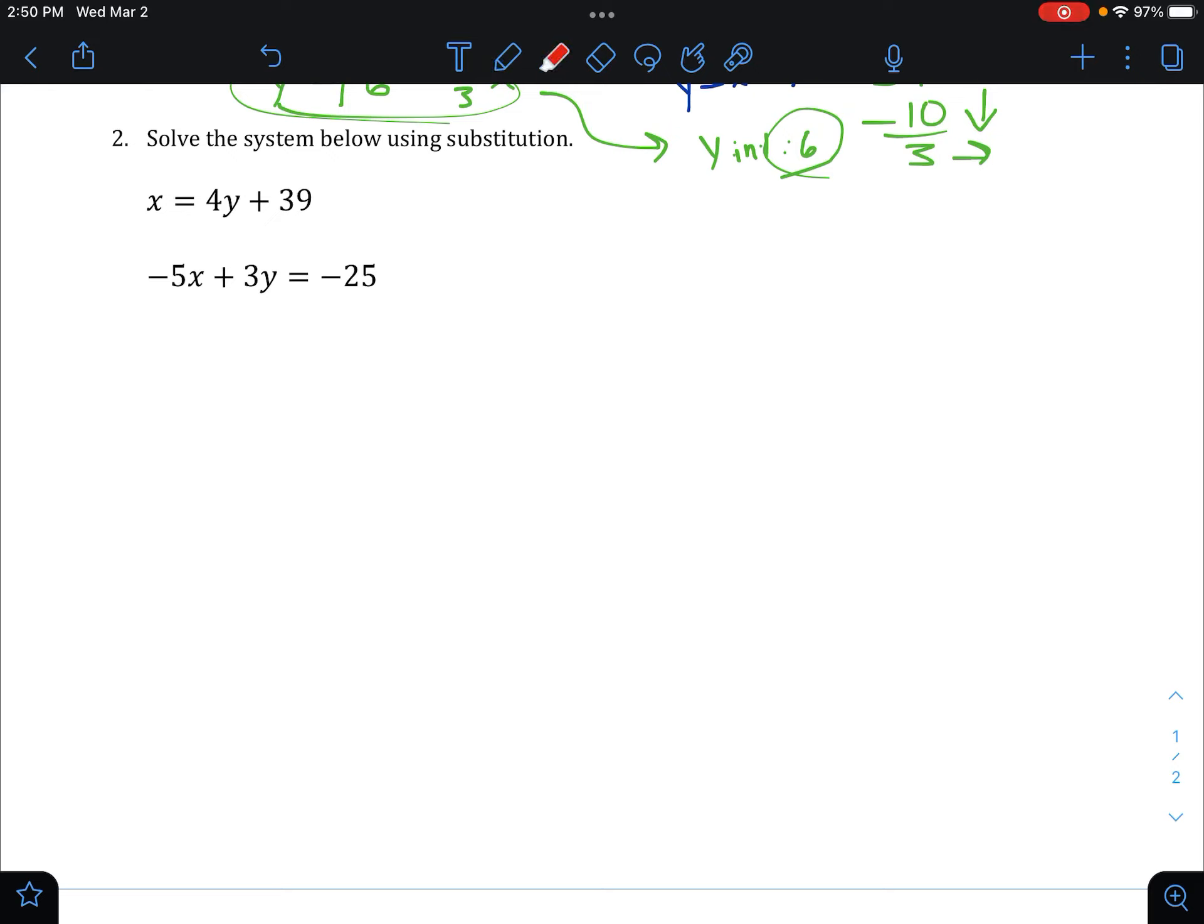I'll use a little different highlighter here. So this whole thing is equal to x. So that whole thing is going to go in place of x in the other equation. So we're going to write the second equation, negative 5x. We're going to take out the x and put a big parentheses here.